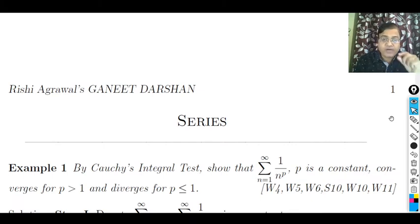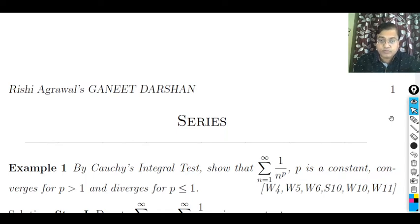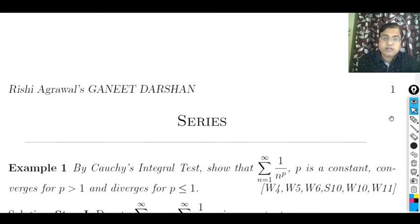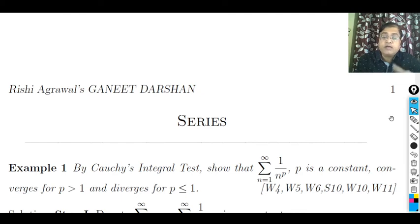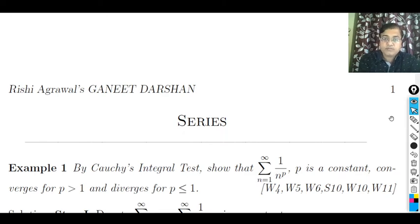Once more: if a function f(x) is non-negative, monotonic decreasing, and integrable for x greater than 0, and if we replace x by n in the function and denote that as u_n, then the series Σu_n and the integral of f(x) with respect to x from 1 to infinity will either both converge or both diverge. This is the statement of Cauchy's Integral Test.